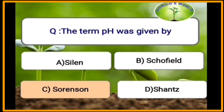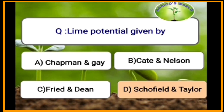The term pH was given by Sorensen. The pH scale measures acidity or basicity, which ranges from 0 to 14. The pE concept was given by Sorensen and the pH concept was given by Schofield.